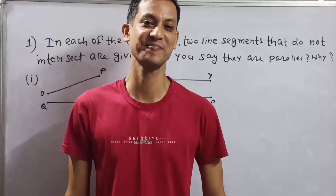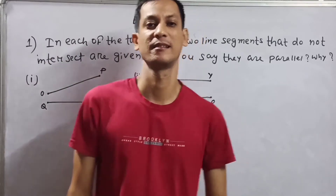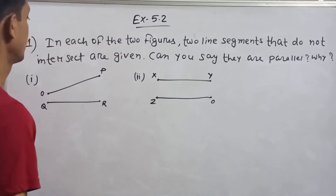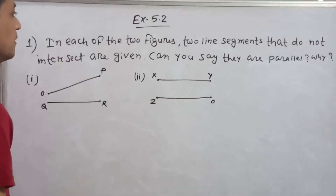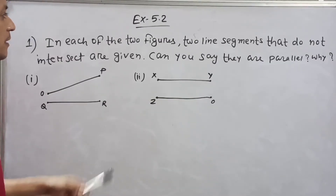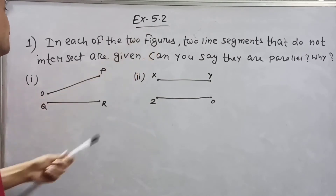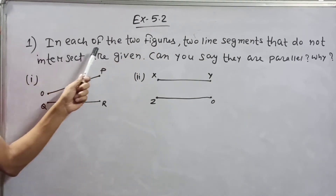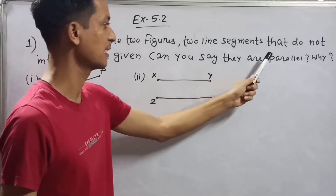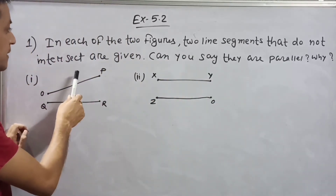Welcome back to my channel. Exercise 5.2, number one: in each of the two figures, two line segments that do not intersect are given. Can you say they are parallel?